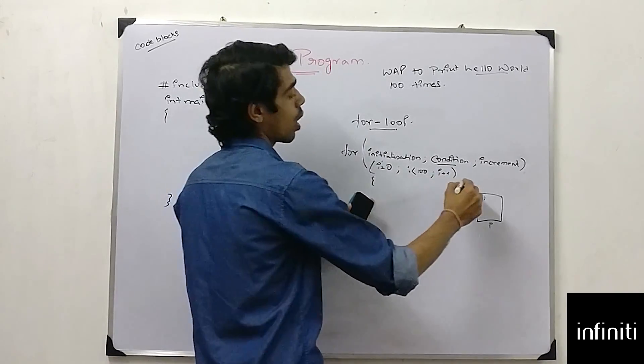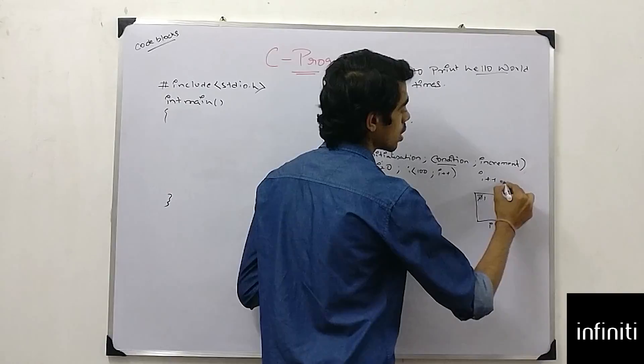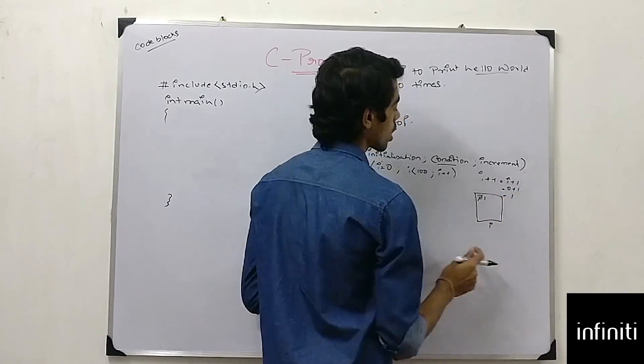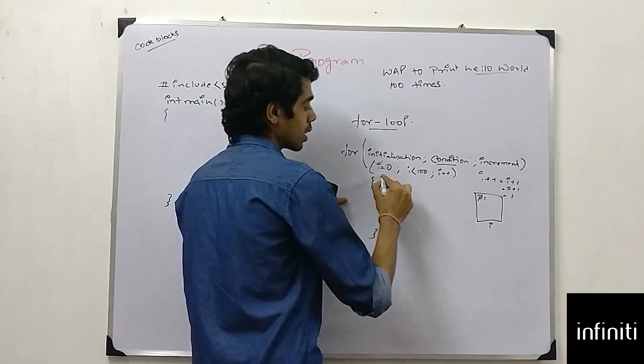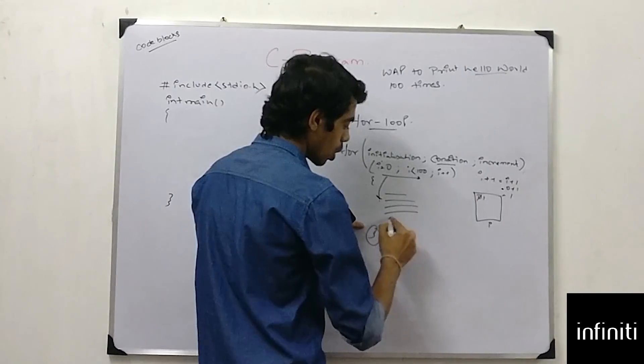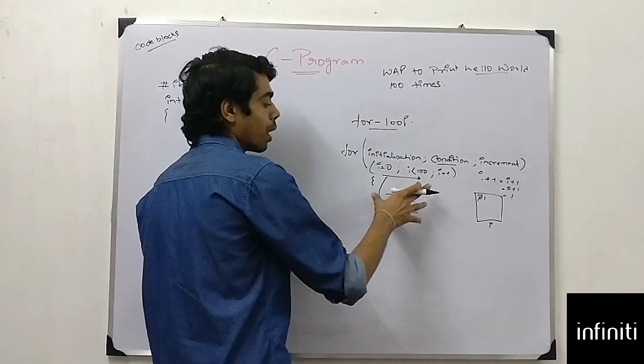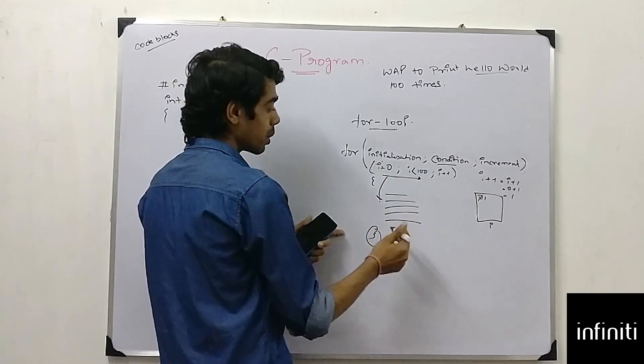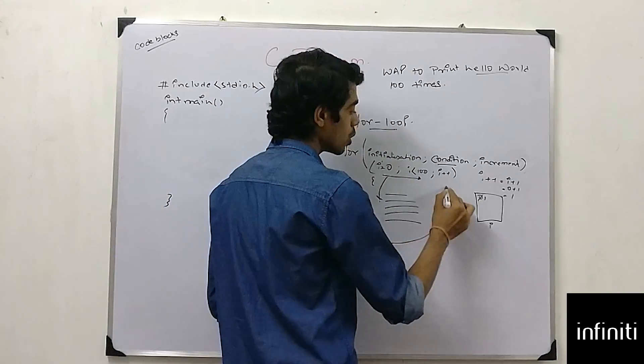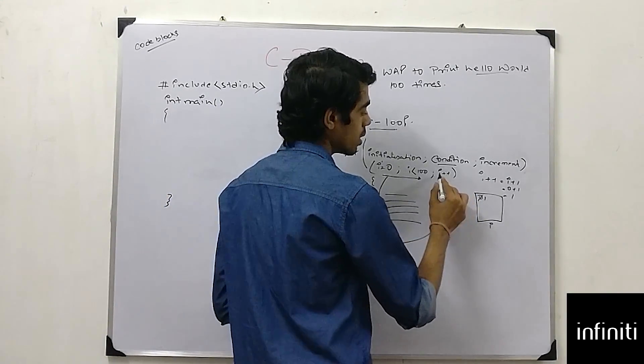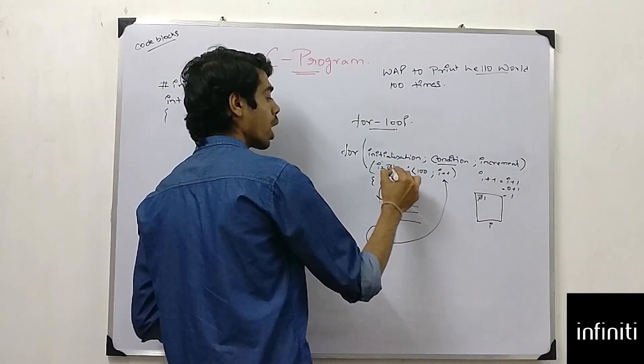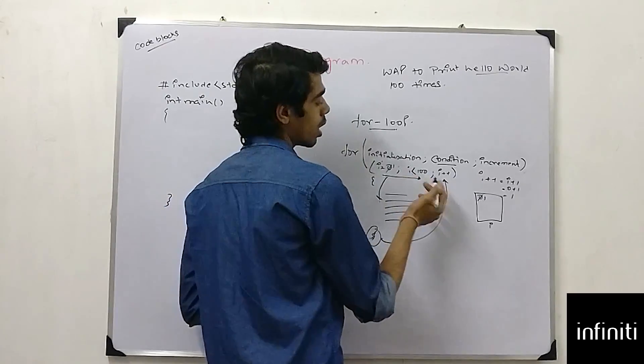While satisfying these two conditions, it will go inside my loop. I have block of statements over here. While satisfying these block of statements, if my i reads this, my i increments my value with one, means zero plus one is one, and then it checks if one is less than hundred. We have condition true.